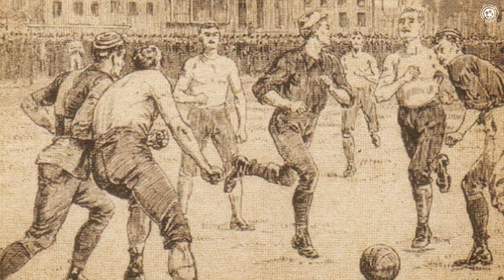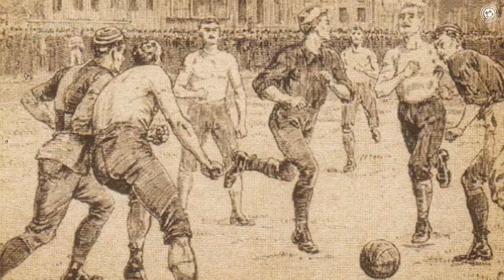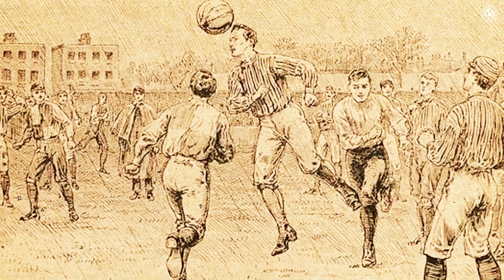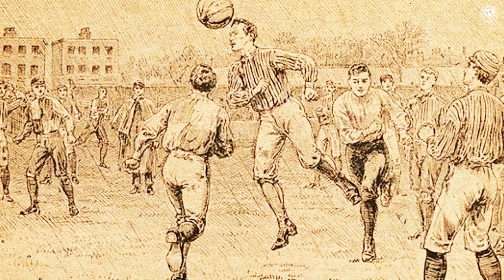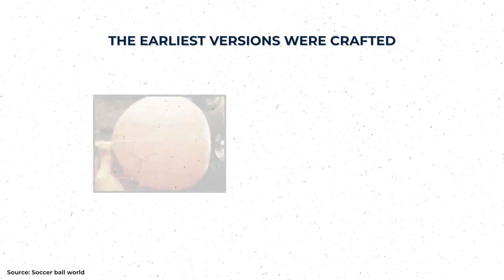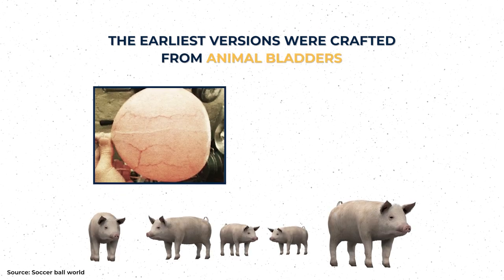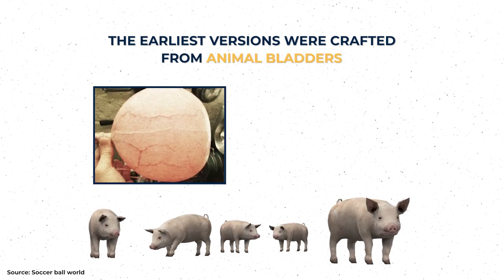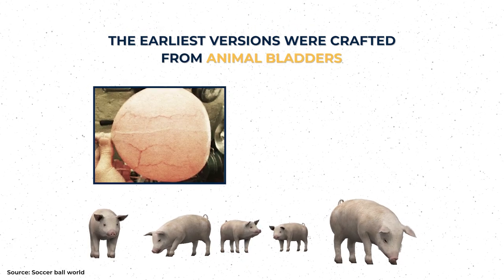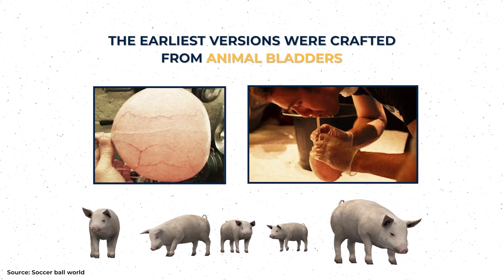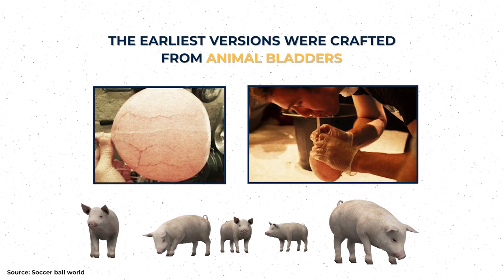The history of football takes us back to ancient civilizations, where various forms of balls were utilized in games. The earliest versions were crafted from animal bladders, specifically inflated pig's bladders. Consequently, these balls were contingent on the size and shape of the inflated pig's bladder.